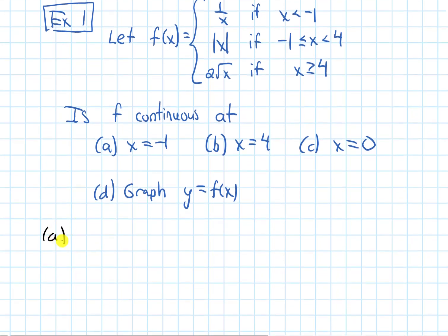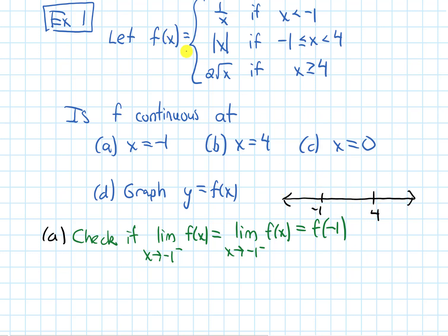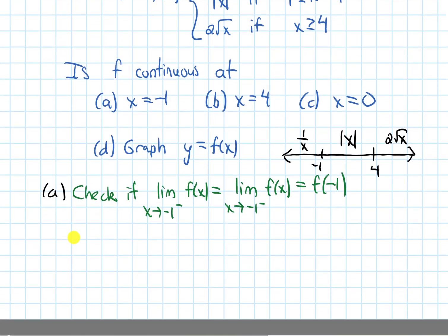Let's do part A. To see if it's continuous, I need to check if the limit from the left as x approaches negative 1 equals the limit from the right as x approaches negative 1, equals f of negative 1. I'm going to draw a number line. The piecewise function switches pieces at negative 1 and at 4. To the left of negative 1, my function is 1 over x; in between negative 1 and 4, it's absolute value of x; and when x is greater than 4, it's 2 root x.